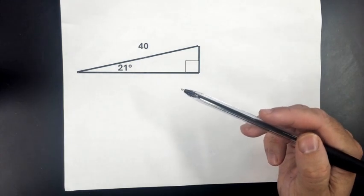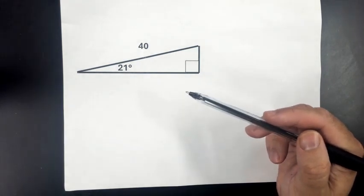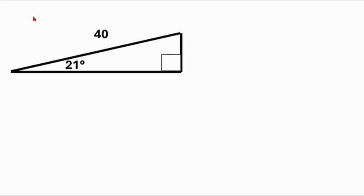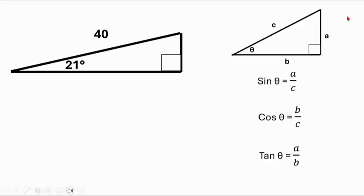Alright, so first of all let's see what we have and compare it to our generic triangle over here. We have our angle, which is theta, at 21 degrees, and we have the hypotenuse which is 40, and that corresponds to C.